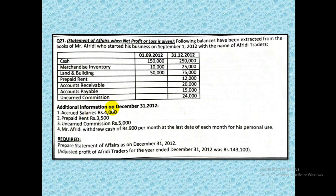This is the additional information — it will always be about adjustments. The adjusting data includes accrued salaries, prepaid rent, and commission. Furthermore, Mr. Afridi withdrew cash 900 per month at the last day of each month for his personal use — whenever the owner withdraws for personal use, that is called drawings. He started business on September 1 and withdrew 900 per month, so altogether 900 multiplied by 4 gives the amount of drawings.